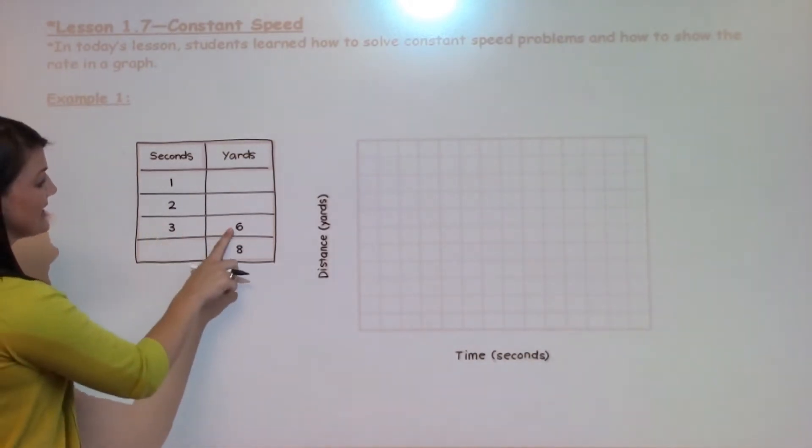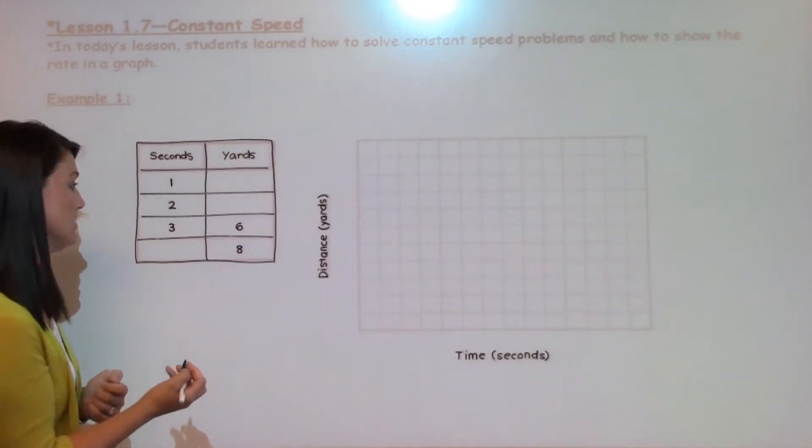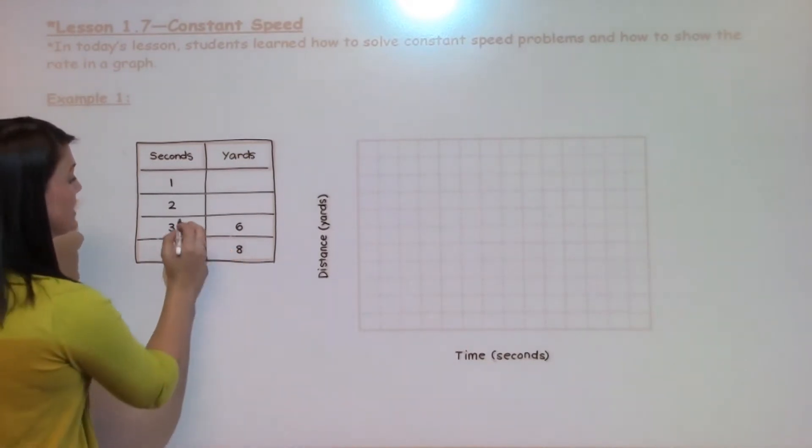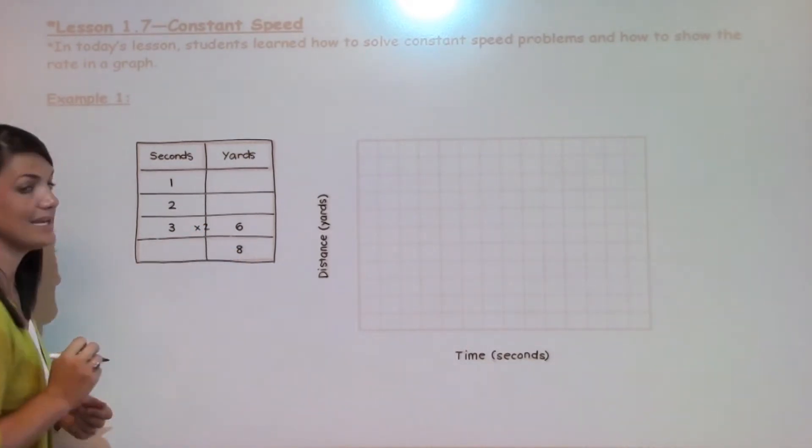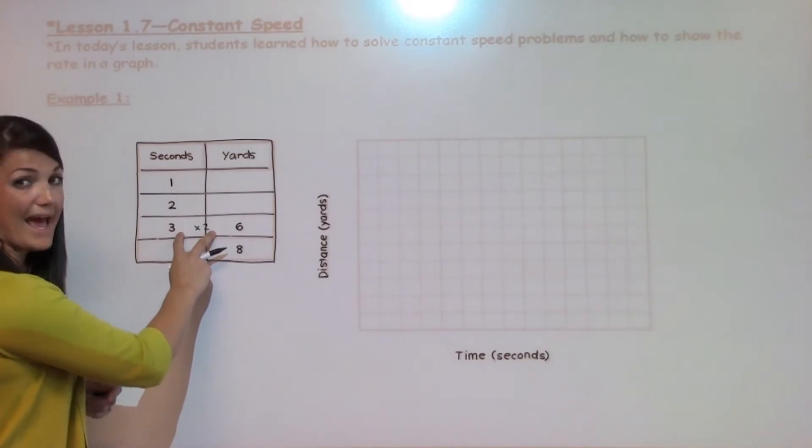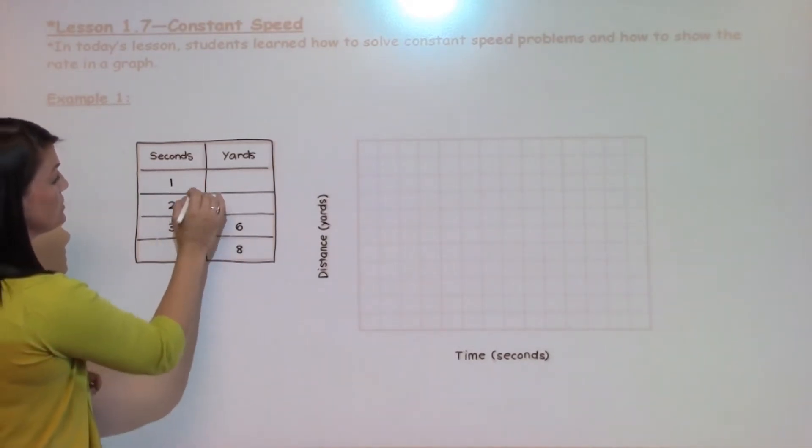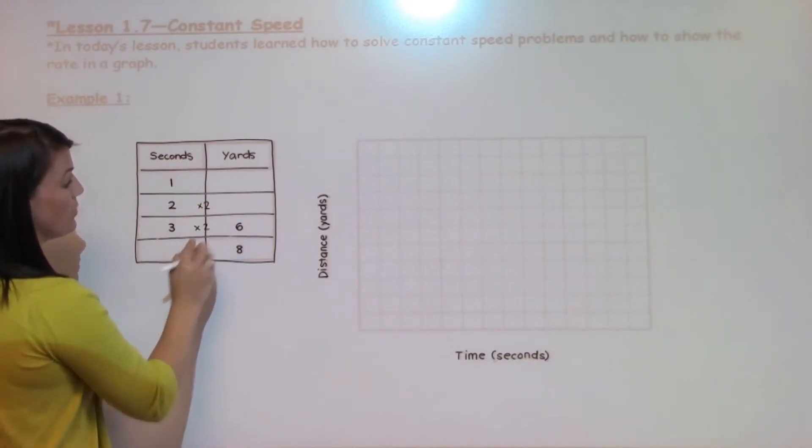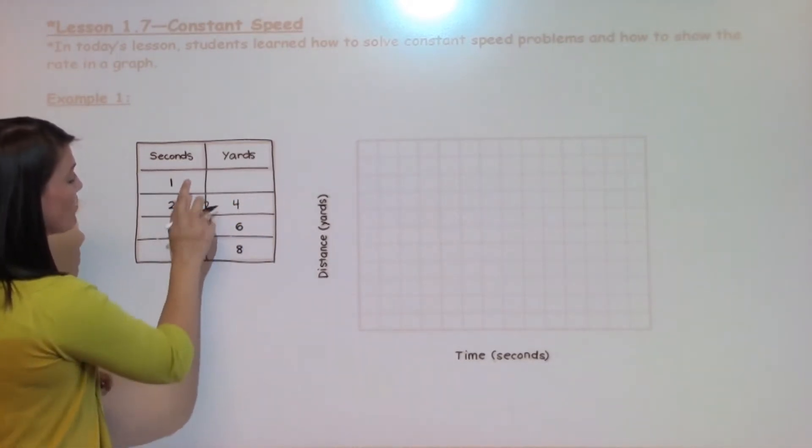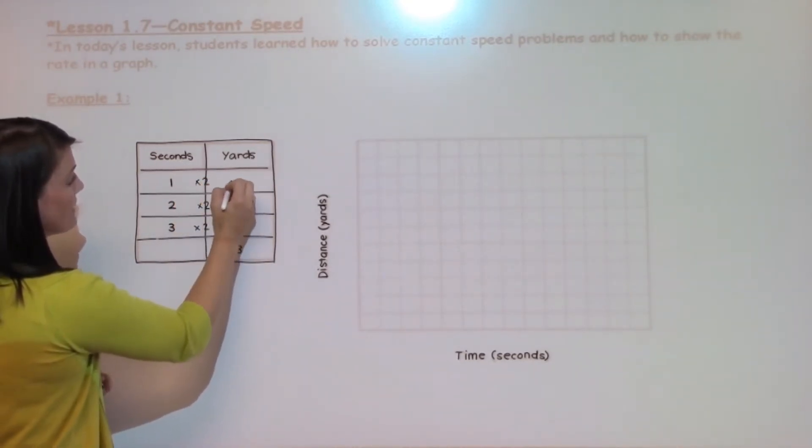I know that 6 is getting bigger, so I am going to use multiplication. 3 to 6 - I am taking 3 times 2 to get 6. Because that is the only connection I have, I know that it must apply to the rest of the table. So 2 times 2 will give me 4, and 1 times 2 will give me 2.